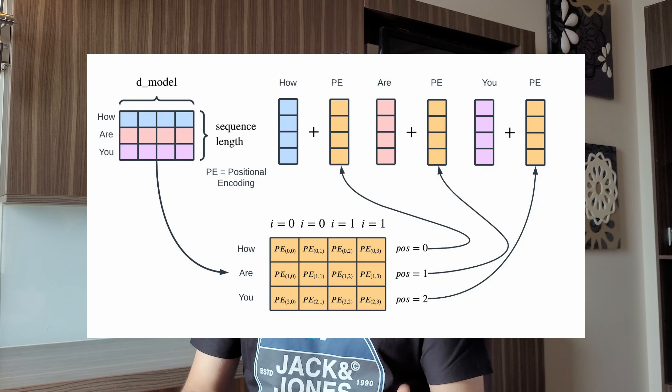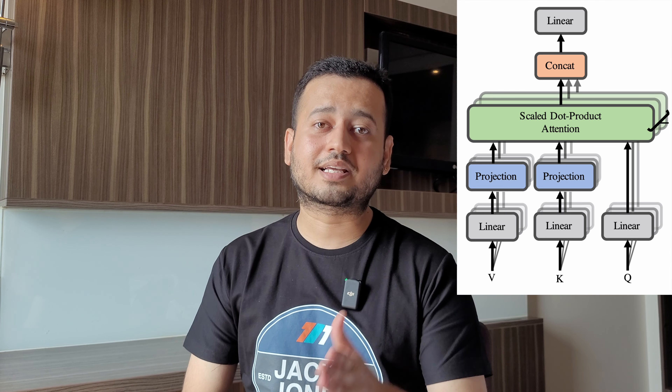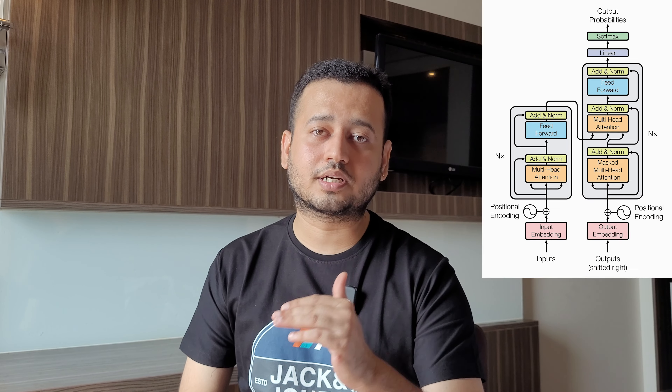ChatGPT, Google Bard, or any other language model you consider — 95% of the models have been created using one network: the transformer architecture. Inside the transformer architecture you have an encoder block and a decoder block. In the encoder you have different concepts such as positional encoding, multi-head attention, and self-attention. You should understand how information is transferred from the encoding block to the decoding section, how a GPT model is different from a BERT model. I've referred to multiple tutorials, multiple blogs, and multiple research papers in order to understand the attention mechanism and the transformer network.